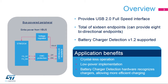The simplest implementation is a USB peripheral device. It provides a 16-endpoint capability, which can be configured, for example, as 8 bi-directional endpoints. It also supports the battery charging detection specification version 1.2. Application benefits include crystal-less operation, a low-power implementation, and faster charging, thanks to the charger detection function.